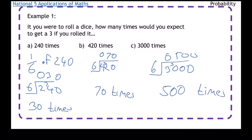Okay, so find the probability as a fraction first and then find that fraction of the amount of times that you're doing it.